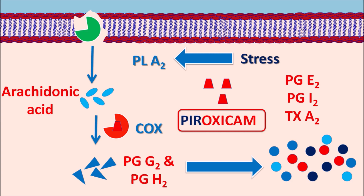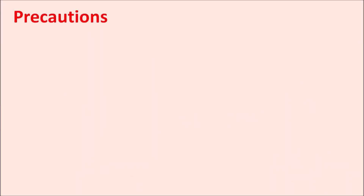This results in decreased pain, swelling, and stiffness of the joints. Apart from this COX inhibition mechanism, piroxicam can also scavenge free radicals and inhibit lymphocyte activity. By all of these mechanisms, it can reduce inflammation and thereby reduce pain and stiffness in the joints.